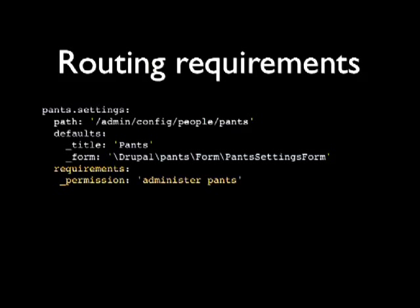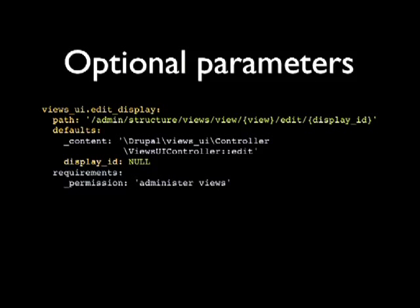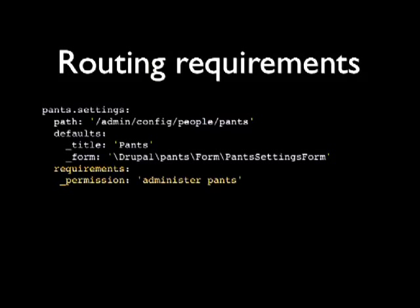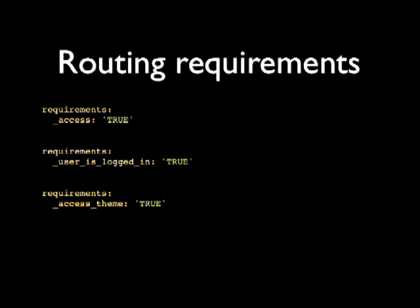Routing requirements are kind of like access arguments in Drupal 7 but with more power. The underscore prefix means internal — don't mess with it. Underscore_permission is equivalent to calling user_access. So _permission: 'administer pants' means they can only reach that route with that permission. Other examples include _access: true (equivalent to access callback = true) and _user_is_logged_in: true for login checks.